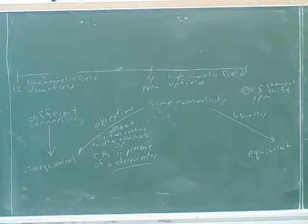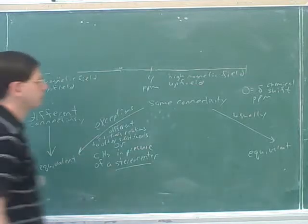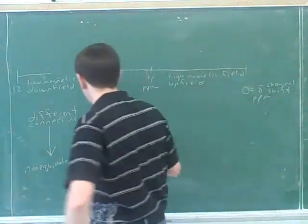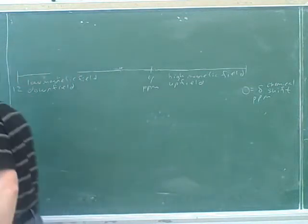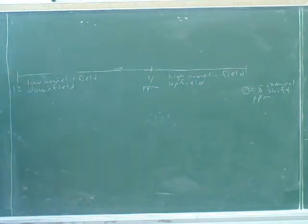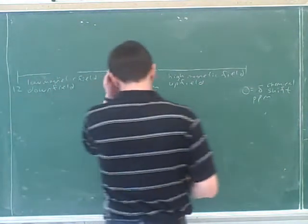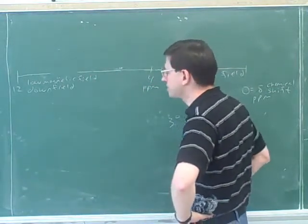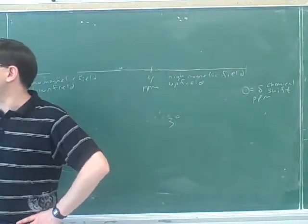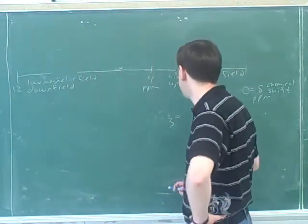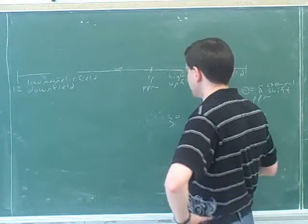The next aspect we can go over is the chemical shift. First of all, more substituted carbons tend to be somewhat further downfield. Hydrogens on more substituted carbons are also a little bit further downfield.